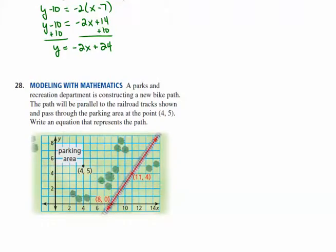A Parks and Recreation Department is constructing a new bike path. The path will be parallel to the railroad track shown and pass through the parking area at point (4, 5). The railroad track passes through point (11, 4). Looking at the graph, we go up 4 over 3, confirming the slope is 4/3.